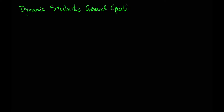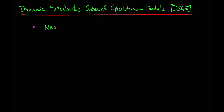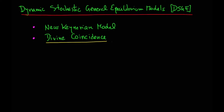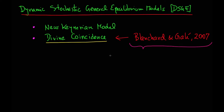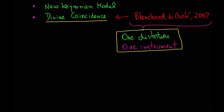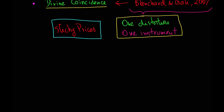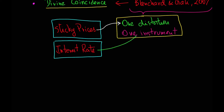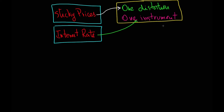Hello and welcome. In this video we're going to talk about dynamic stochastic general equilibrium models. This lecture is based on the Nucasen model, and we will see how one distortion, like sticky prices, can be offset with one instrument. So the optimal monetary policy stabilizes both output gap and inflation, with no trade-off. This is the divine coincidence concept, a concept elaborated by Blanchard and Galli in 2007.